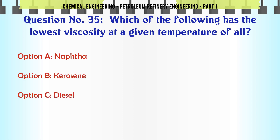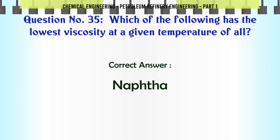Which of the following has the lowest viscosity at a given temperature? A. Naphtha, B. Kerosene, C. Diesel, D. Lube oil. The correct answer is Naphtha.